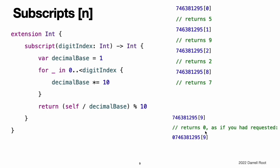If the int value does not have enough digits for the requested index, the subscript implementation returns zero, as if the number had been padded with zeros on the left.